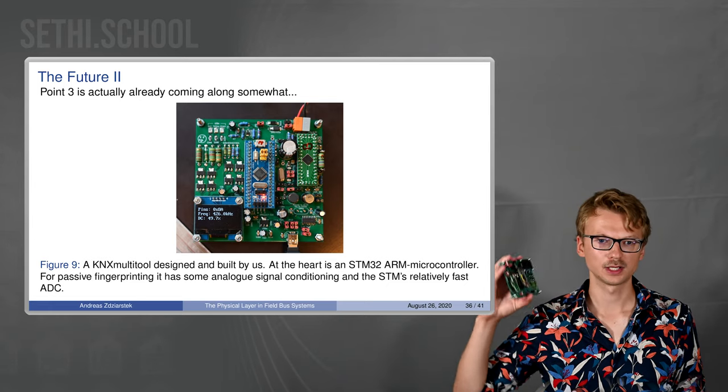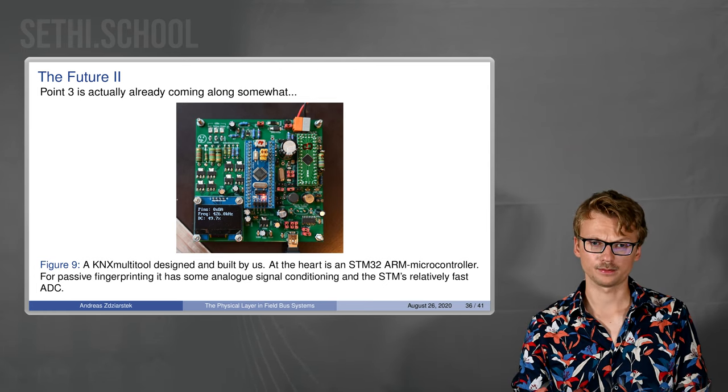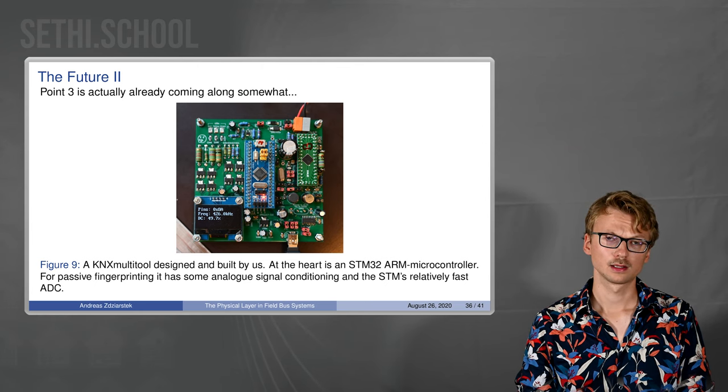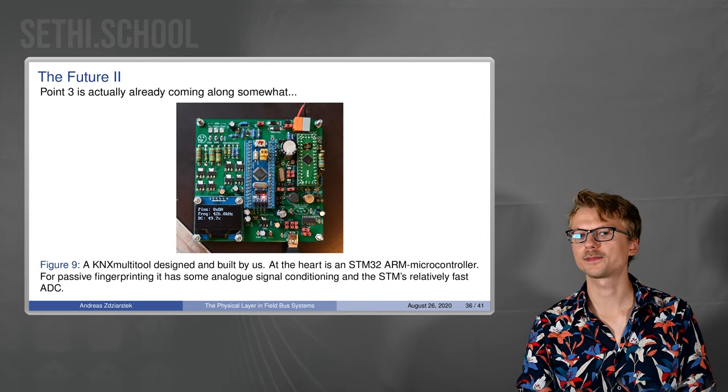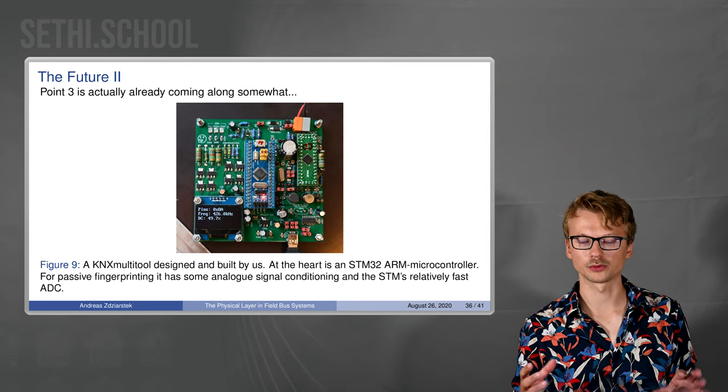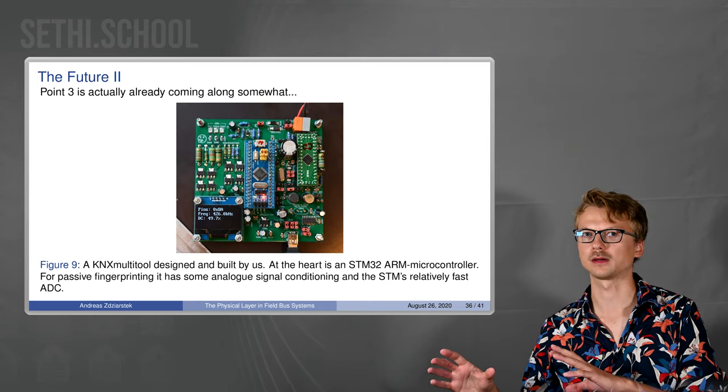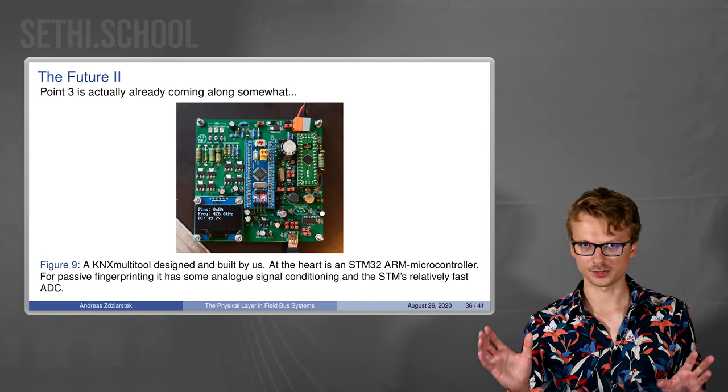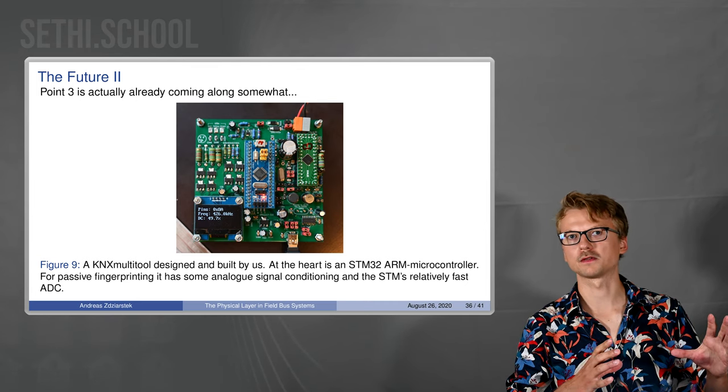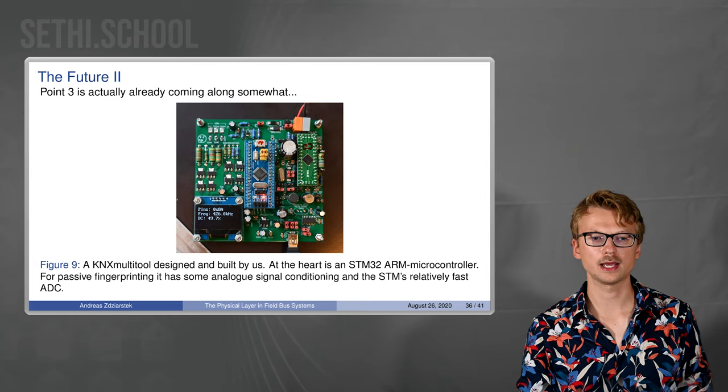And actually point three is already coming along somewhat. It's a board we developed which can be connected to KNX networks and it can do passive listening. It can also, to get around this slow traffic limitation somewhat, send out KNX packets basically questioning all the devices to send it some serial number response or something so that it can compare what the devices say they are to what it thinks they actually are. So this is a first step in that direction.